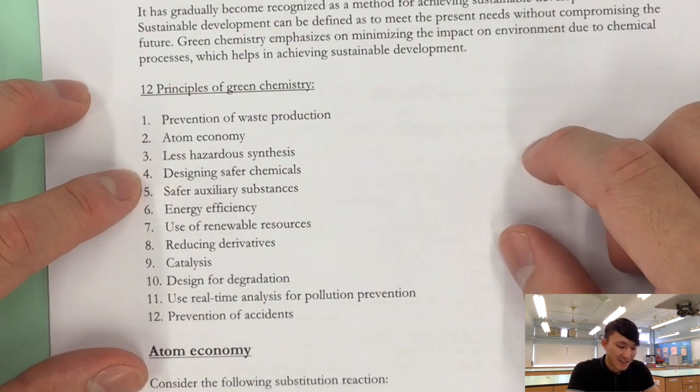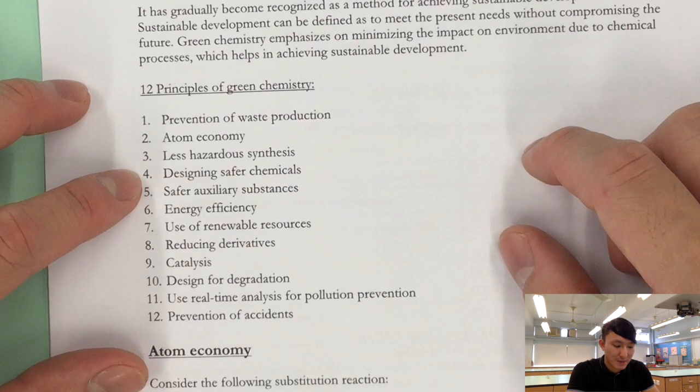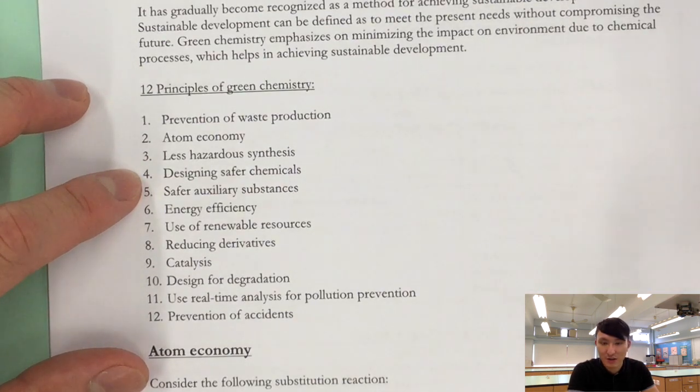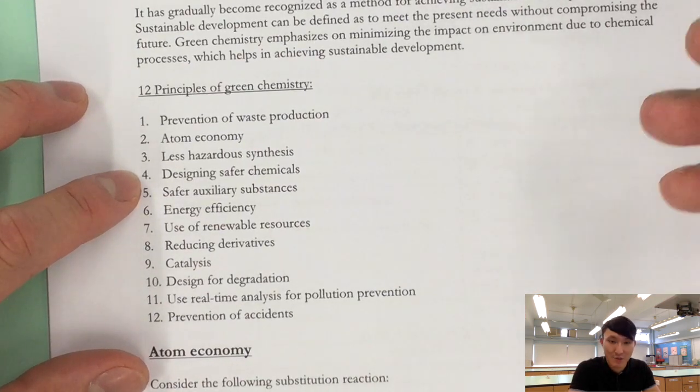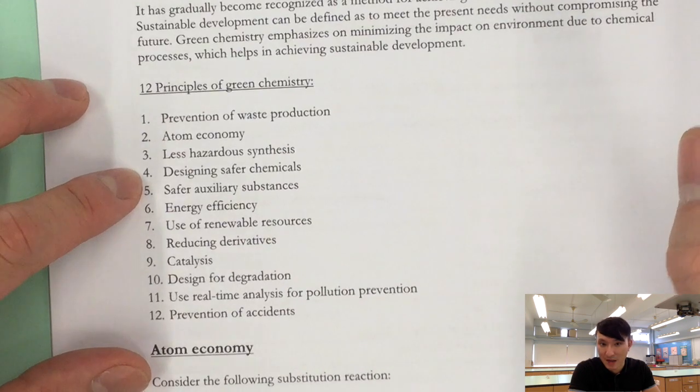Number four, designing safer chemicals. Basically you try to use safer alternatives to replace the reactants or any chemicals that we use in an existing reaction pathway.